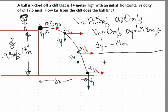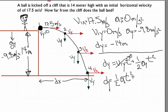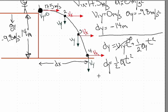The equation is: the distance in the y direction equals the initial velocity in the y direction times time, plus one half times the acceleration in the y direction times t squared. Since the initial velocity in the y direction is 0, that term drops out, and the equation simplifies to: dy equals one half times a times t squared.